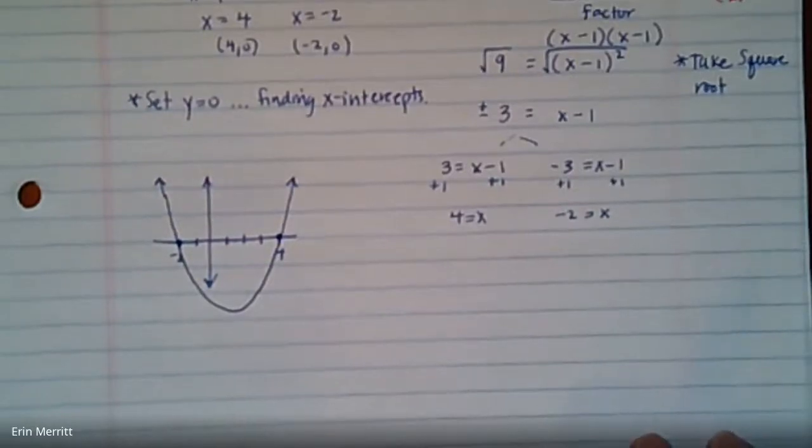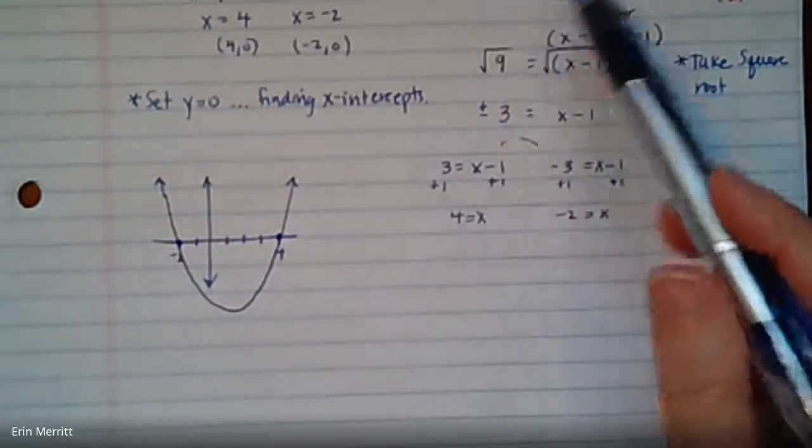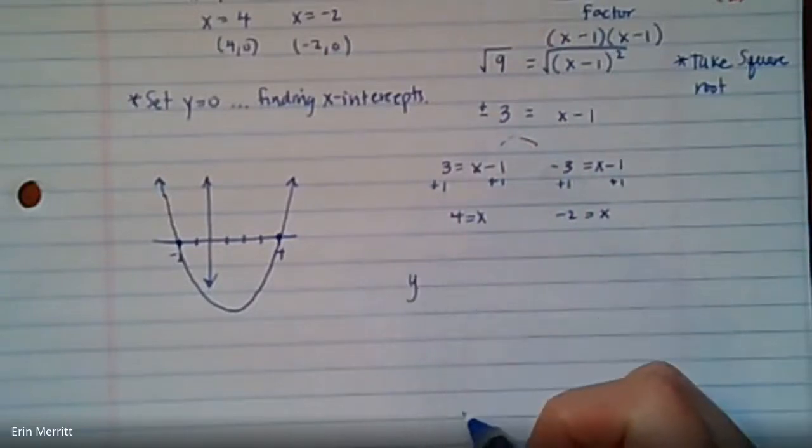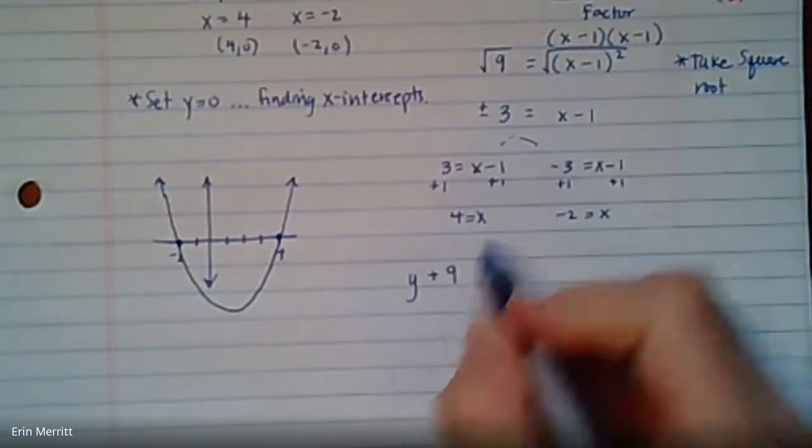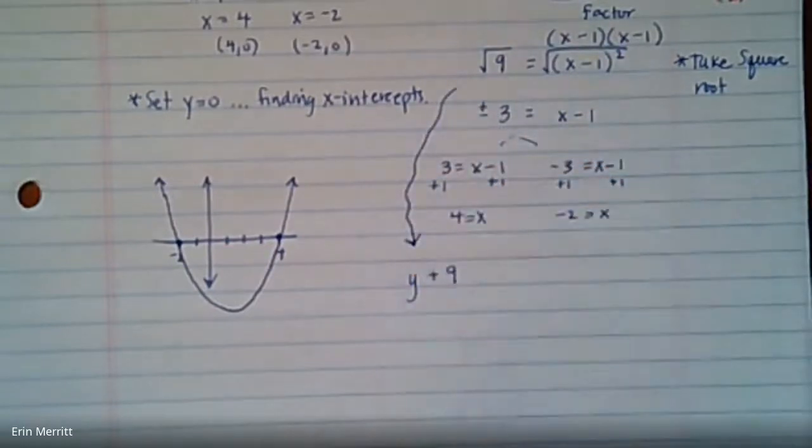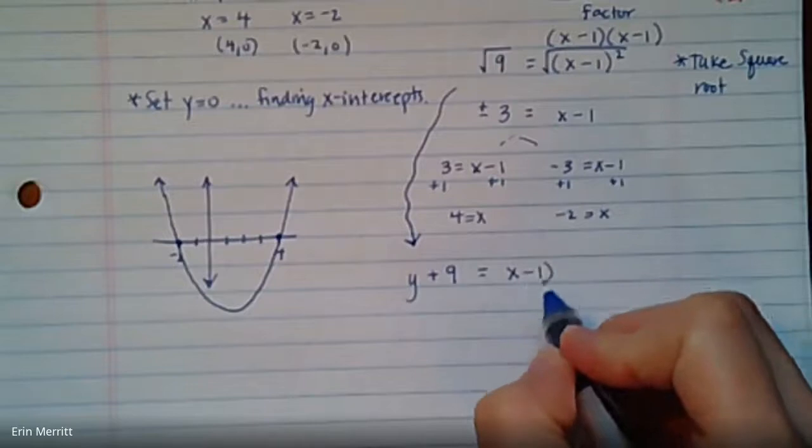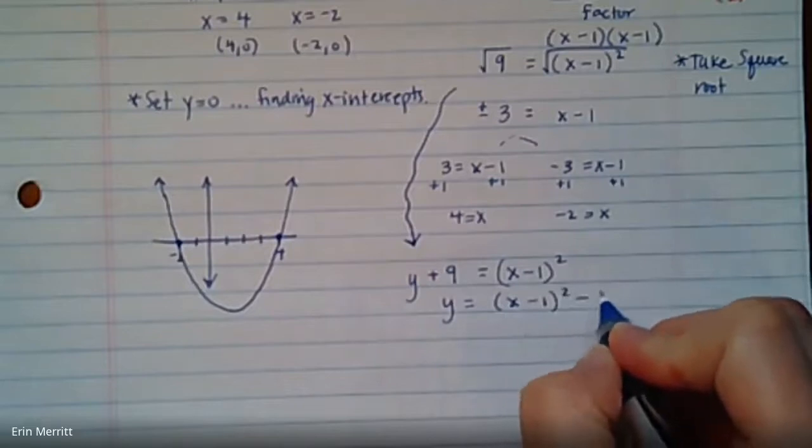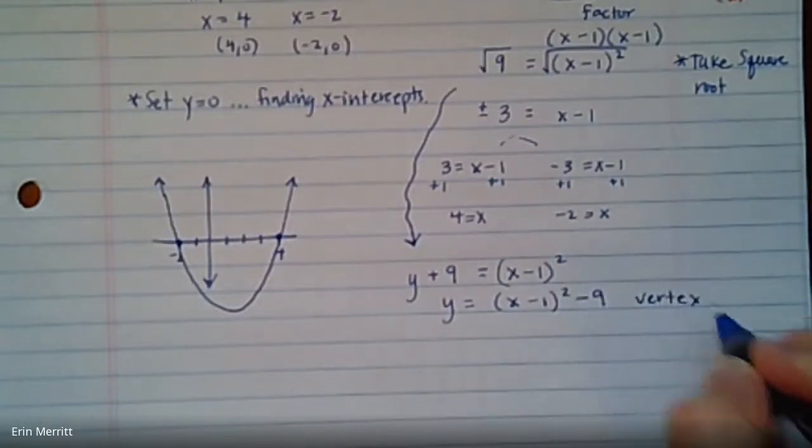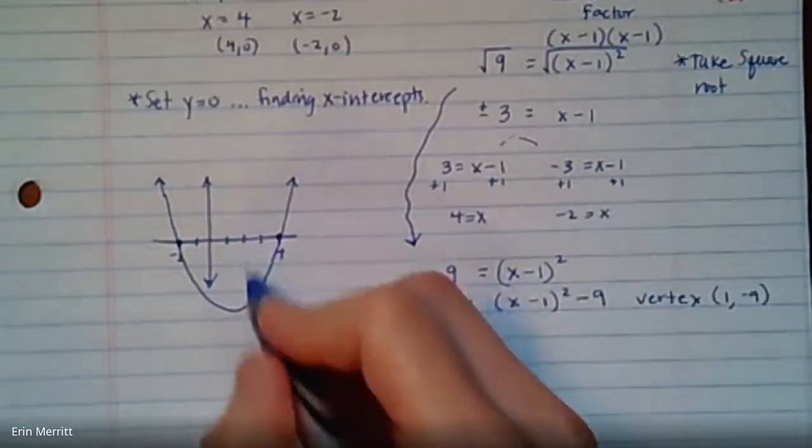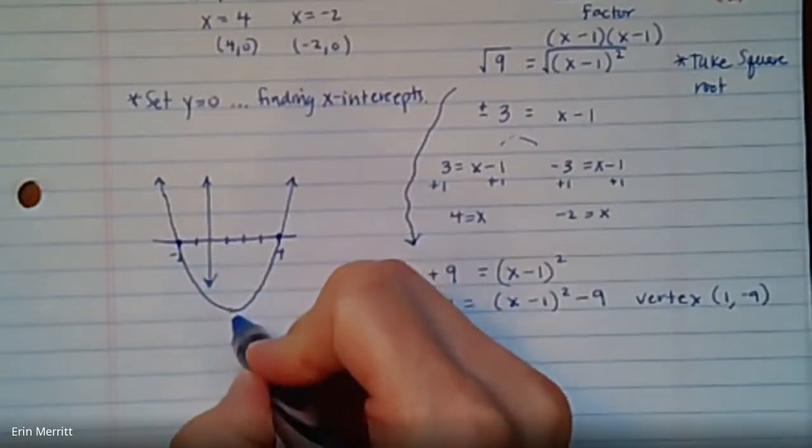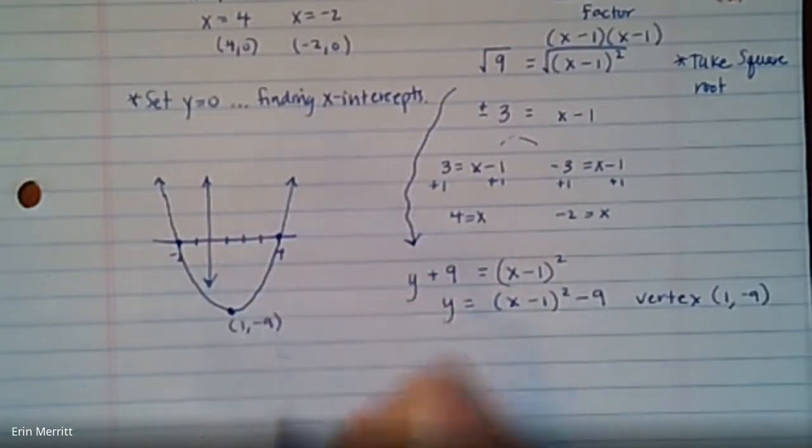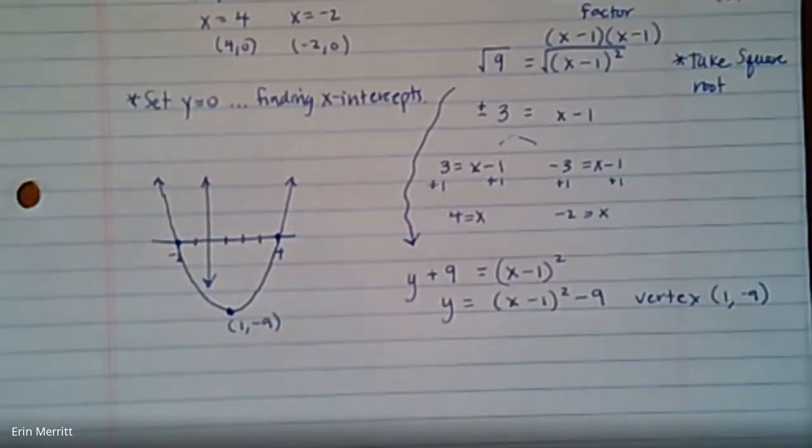If we wanted to know where exactly is the vertex, we know how to get it into vertex form. We kind of did some of that work already. I could steal what I had done over here. Imagine the y was still in there. It would have been y plus 9 equals x minus 1 squared. The last step would have been to move the 9 back over. The vertex based on this is going to go to the right one and down 9. So that vertex point would be at 1 negative 9.